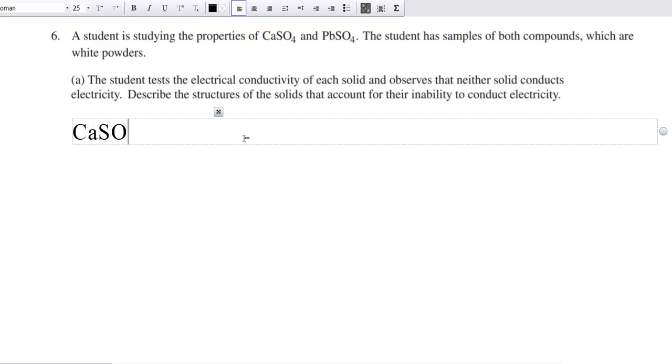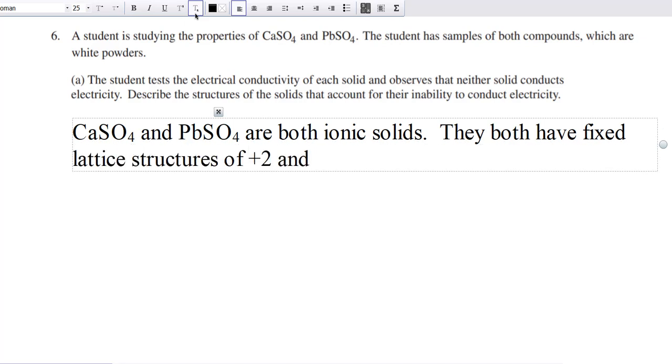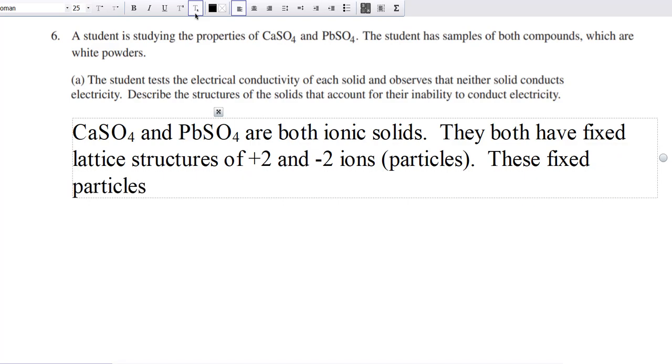You can see our calcium sulfate and our lead sulfate are both ionic solids, aren't they? They both have fixed lattice structures of positive 2 and negative 2 ions, or you could say particles. These fixed particles do not conduct electricity.